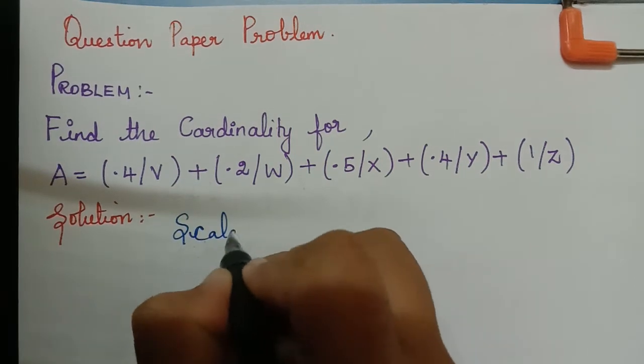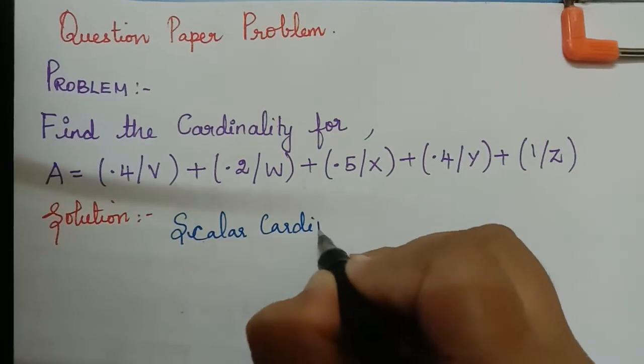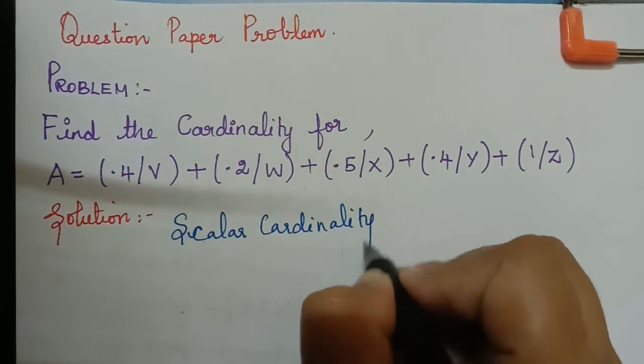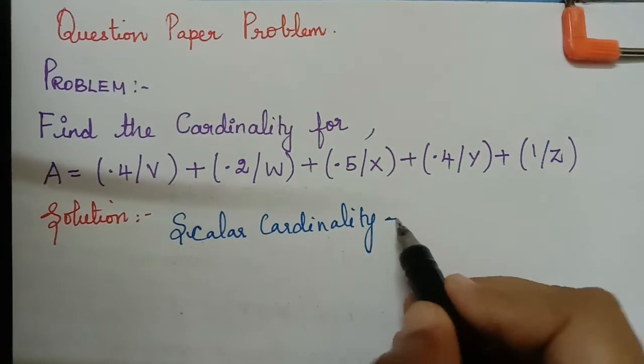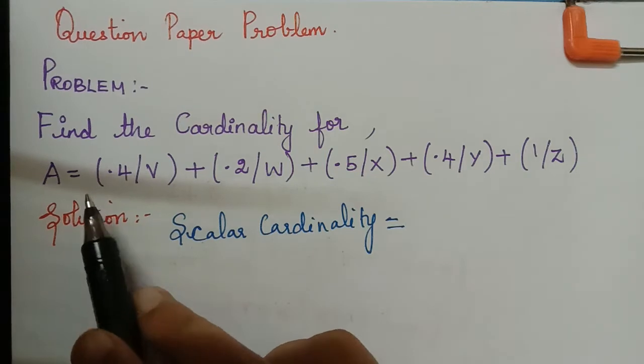So what is scalar cardinality? Scalar cardinality is the sum of all the membership grades of the given fuzzy set.